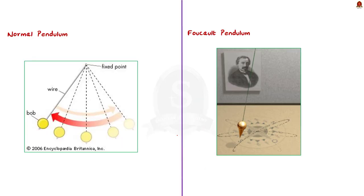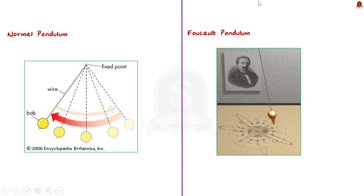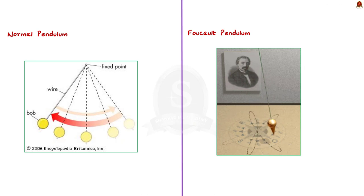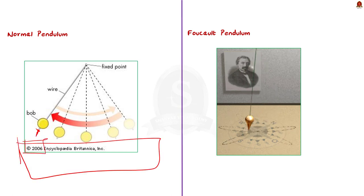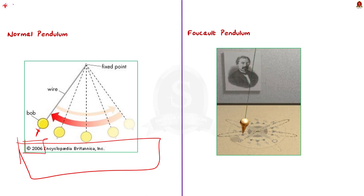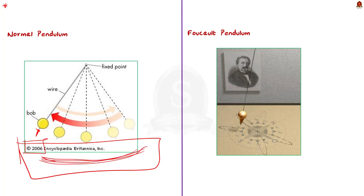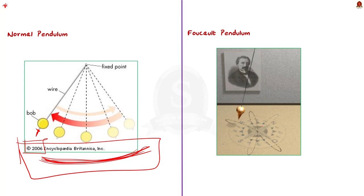Imagine a normal pendulum with a bob at the end. Now imagine you tie a pen to the bottom of this bob and keep a paper under it. The pendulum swings, and after some time you see the paper — it will have straight lines traced by the pendulum. But the Foucault pendulum does not move like an ordinary pendulum in one direction.